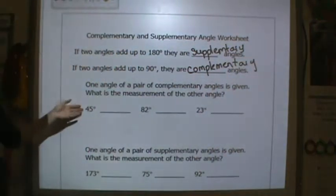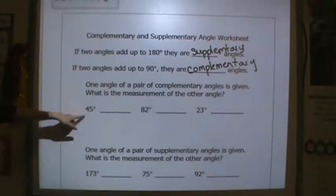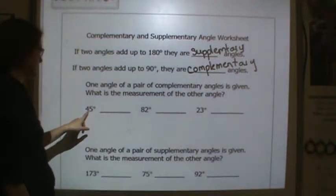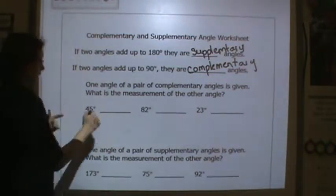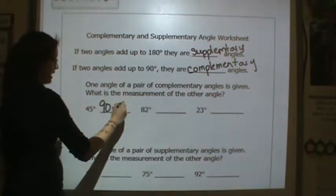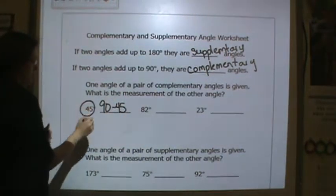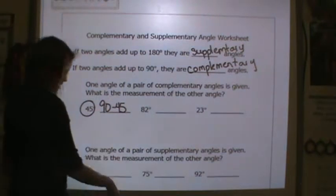All right so if I have a complementary angle here, one angle is 45 degrees. I know a complementary angle totals up to 90. So if I did 90 minus 45 degrees, here's my 45, what would be the other angle?